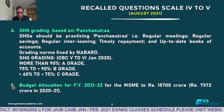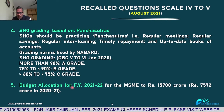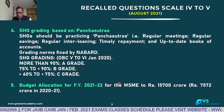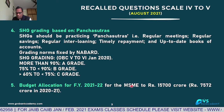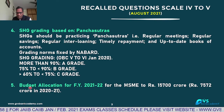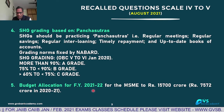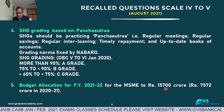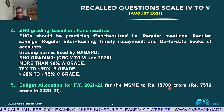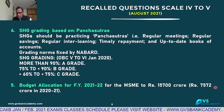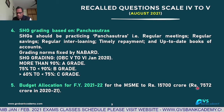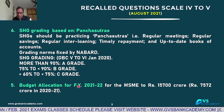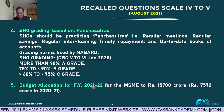Q5: Budget allocation for financial year 2021–22 for the MSME sector is ₹15,700 crores. For the previous year 2020–21, it was ₹7,572 crores. So the current year 2021–22 allocation is ₹15,700 crores.